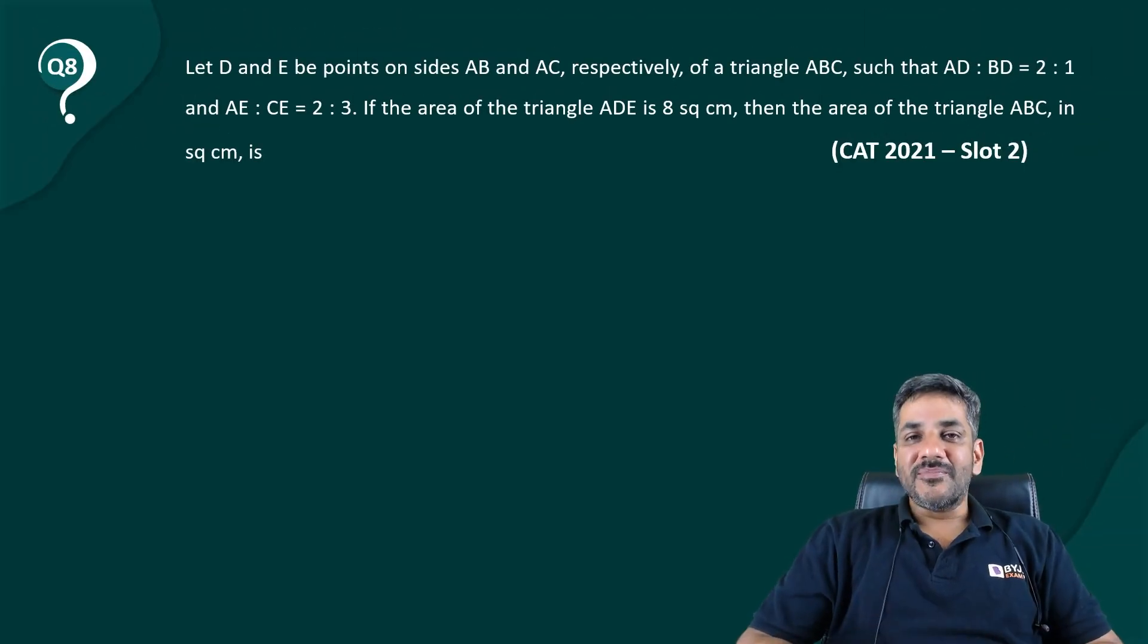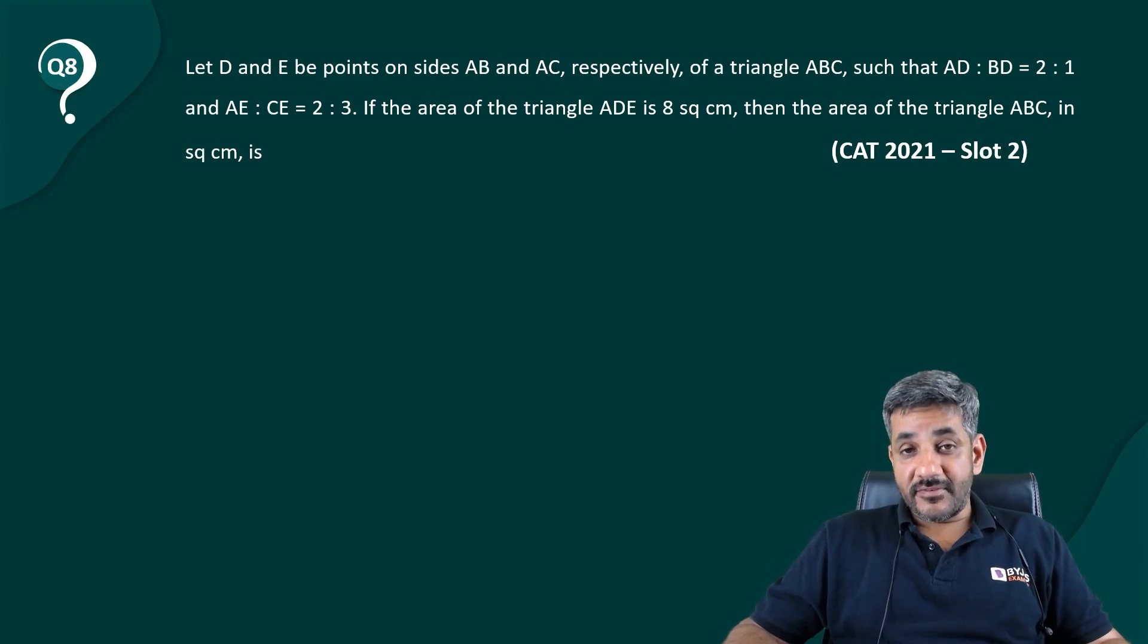Hello, welcome to question number 8 once again from CAT 2021 Slot 2. D and E are points on sides AB and AC respectively of a triangle ABC such that AD to BD is given, AE to CE is given, area of triangle ADE is given to us, and then the area of triangle ABC is asked.